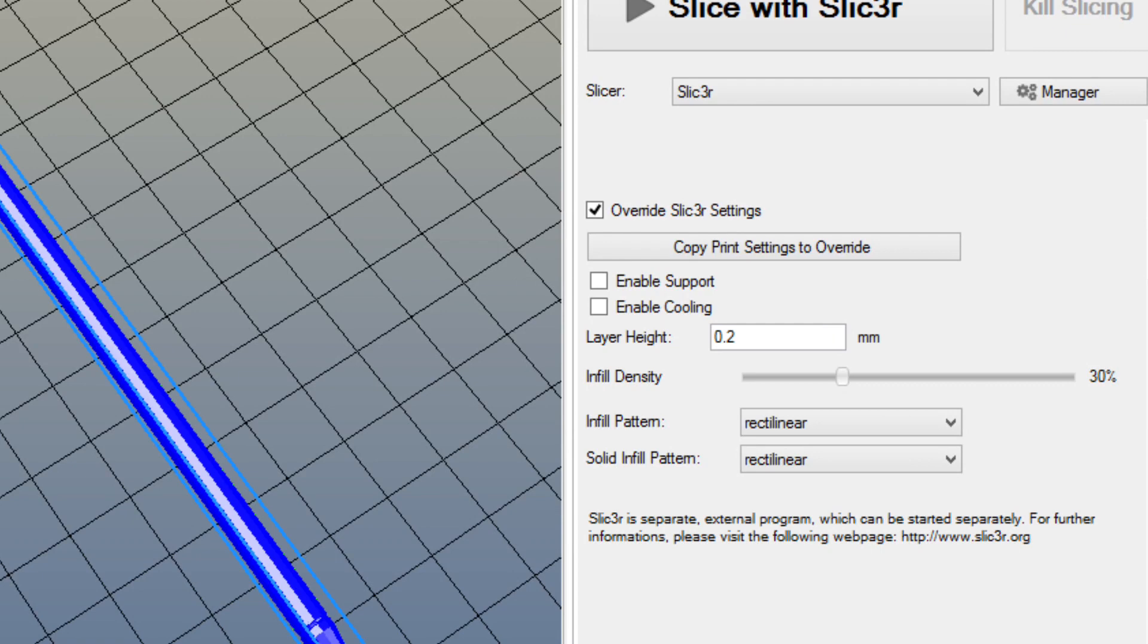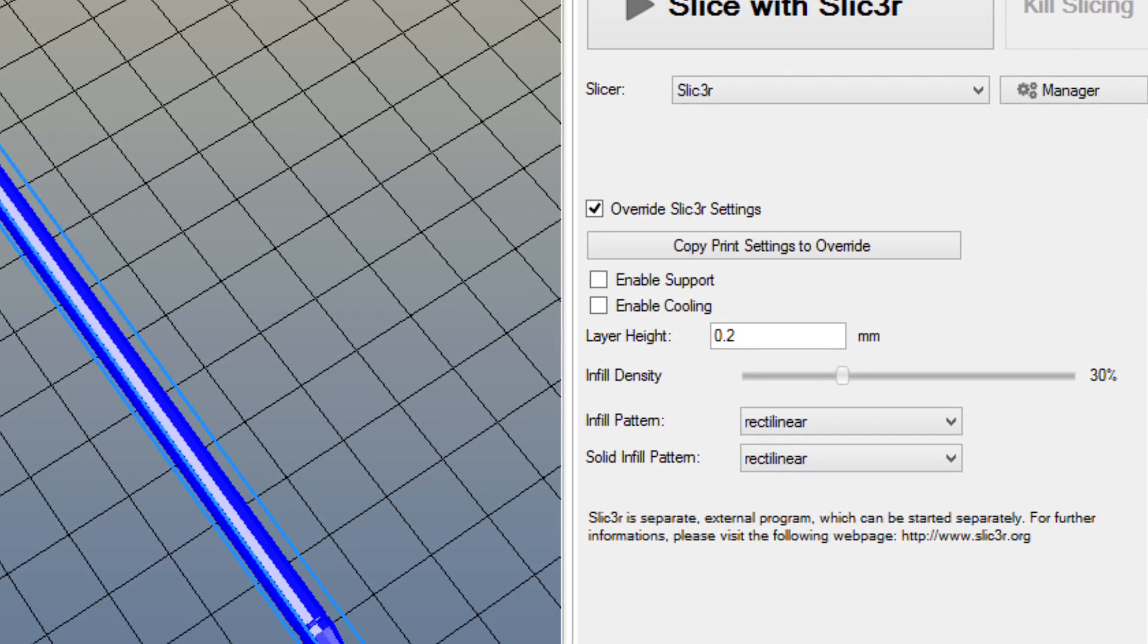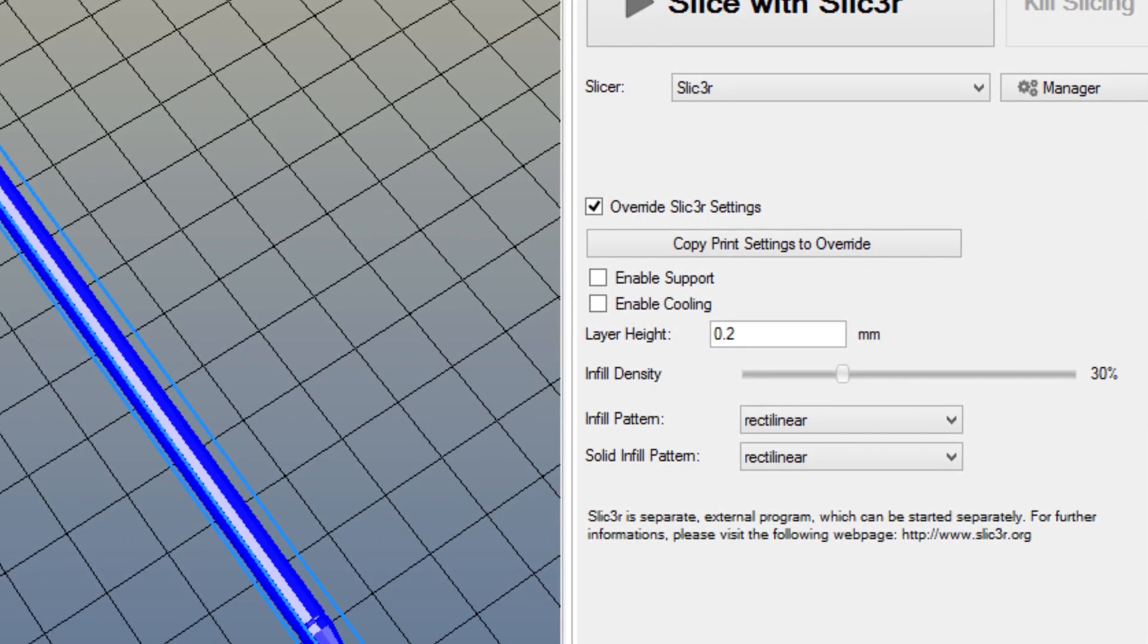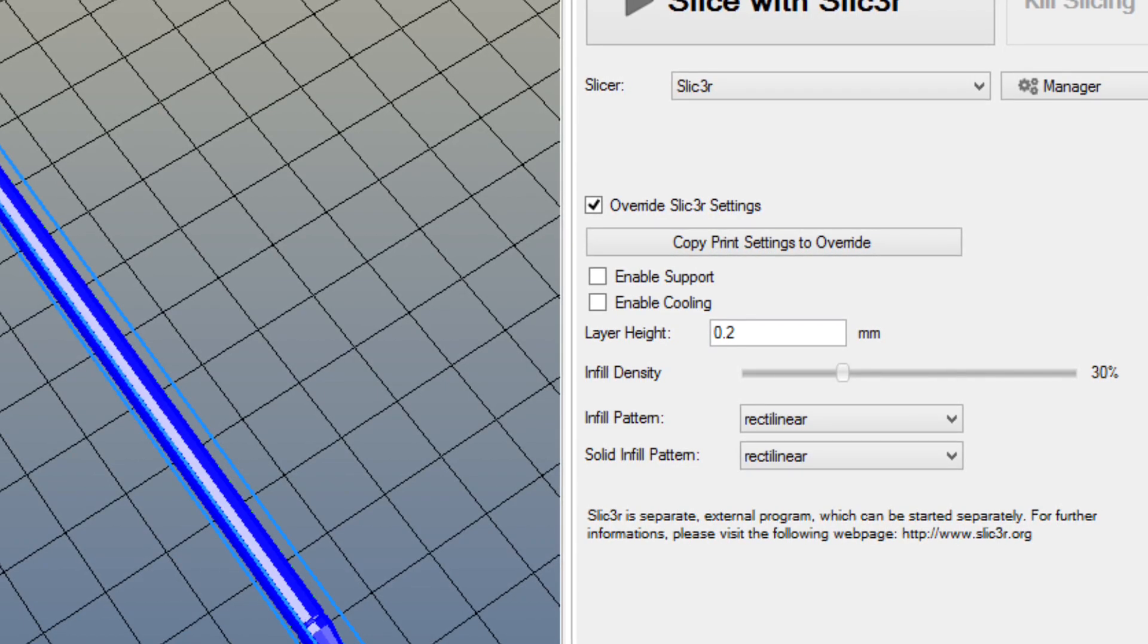Then I went back to my slicer main screen and I checked the box override slicer settings. That way I could set them here. So I set the layer height to 0.2 and 30% fill.